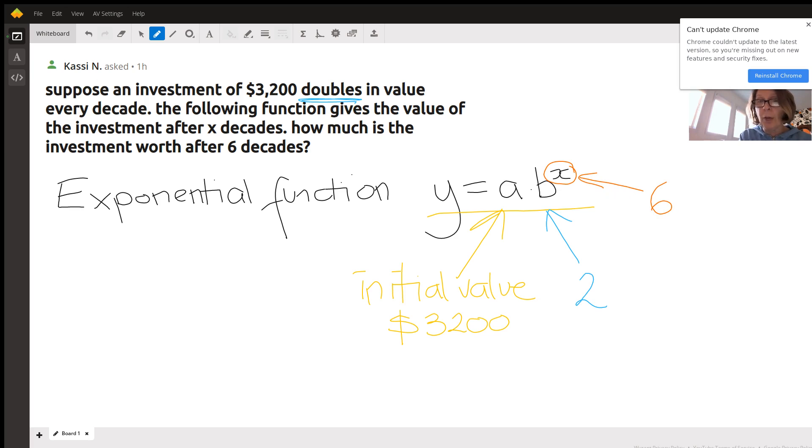We're just going to put all the numbers in there. We've got y, which is the value of the investment after 6 decades, equals $3,200 multiplied by 2 to the power 6.